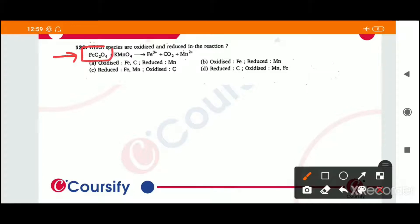If we look at the oxidation number of iron, what is Fe? Fe is 2+. And on the product side, Fe is 3+. So what does this mean? Oxidation.